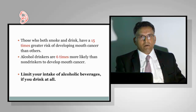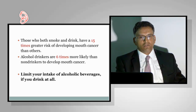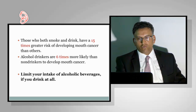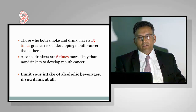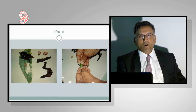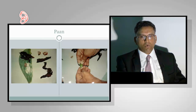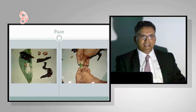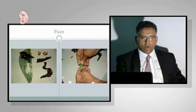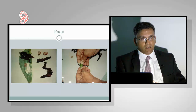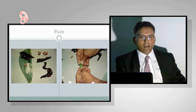Those who smoke and drink have a synergistic effect — 15 times the risk of developing mouth cancer compared to non-smokers and non-drinkers. If you are purely an alcohol drinker and don't smoke, you are six times more likely to develop mouth cancer than a non-drinker. The advice is to limit alcohol intake or cut it out completely. For those who don't know what paan is, it's a habit within South and Southeast Asia — India, the Indian subcontinent, Pakistan, Taiwan — where the use of the betel nut is used routinely as a habit, just like smoking and drinking in Western countries. This photograph shows the betel leaf — the green leaf you can see there. The nut itself is the areca nut, which is carcinogenic, i.e., it causes cancer.